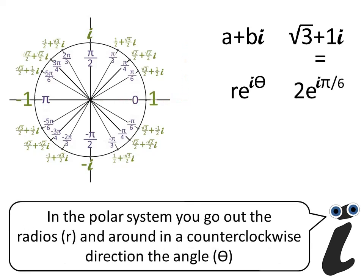In the polar system, you go out the radius r, and around in a counter-clockwise direction, the angle theta.